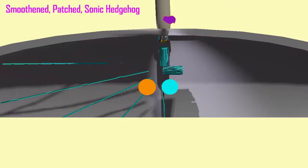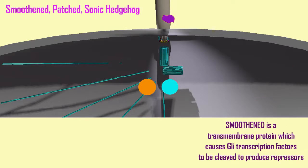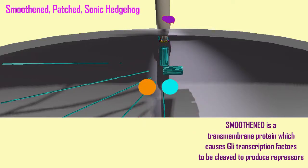There is a transmembrane protein which can activate second messengers that cause the cleavage producing transcription repressors. This is known as Smoothened.